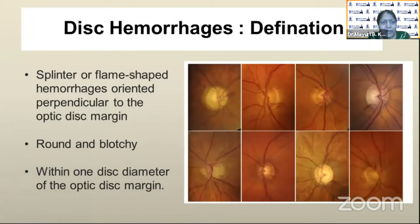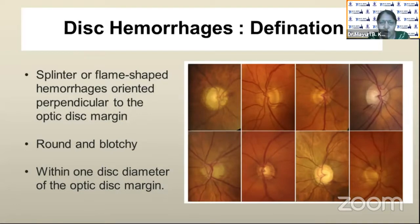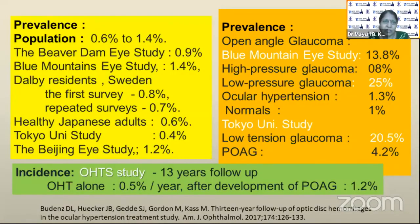It could be a splinter or flame-shaped hemorrhage oriented perpendicular to the optic disc margin, or round or blotchy, and usually it is within one disc diameter of the optic disc margin.